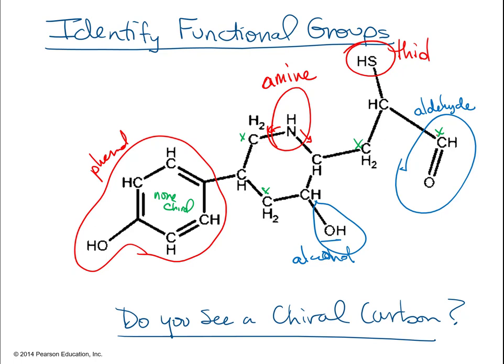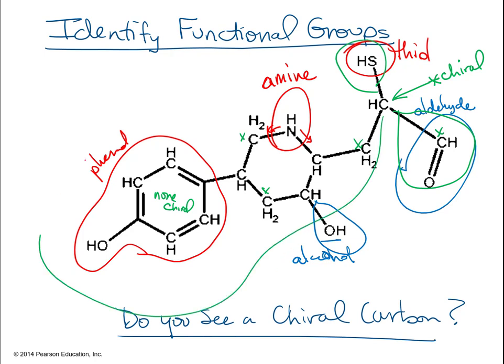I told you I wouldn't bother with the ring structures — there are actually two or three carbons in that ring structure, but we won't worry about those. For the ones not in a ring, what's the only carbon left? See the one just below the thiol. When you look at it, it has one carbon, a thiol group, an aldehyde group, and then that entire double ring to the other side. All of those are different, so this is a chiral carbon.